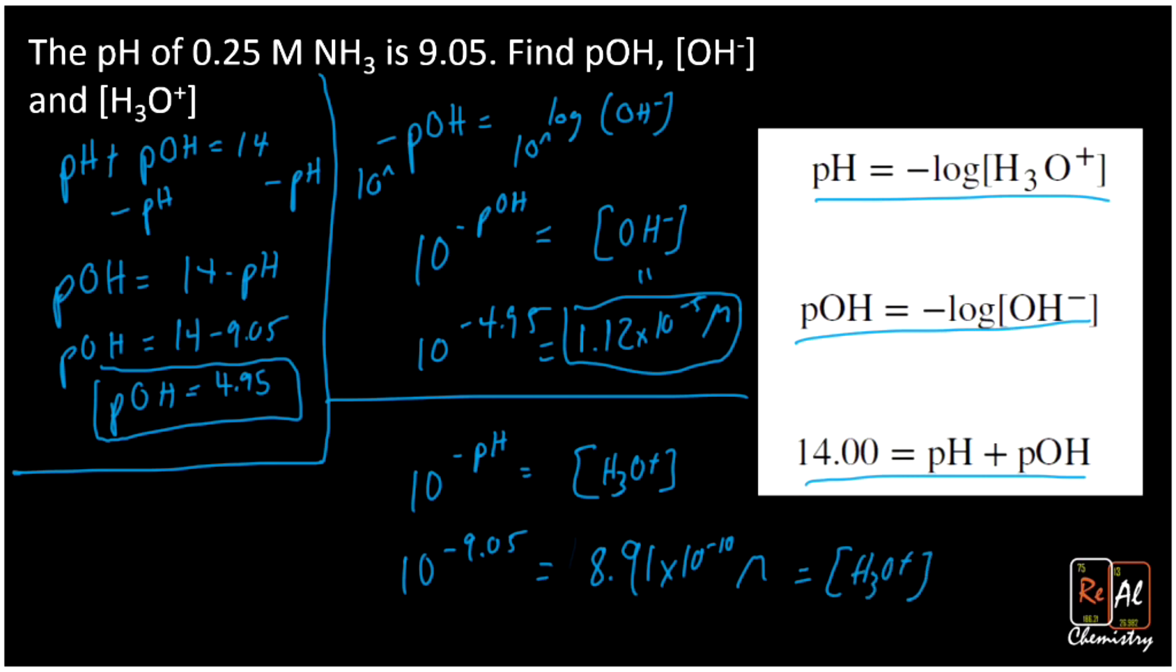Alright, so that's the concentration of my hydronium ions. So there you have it. Those are those three different pH equations that turn out to be really useful to solve for all of the different variables you need when you're dealing with an acid or a base. Thanks for watching this episode of Real Chemistry.